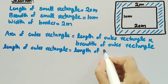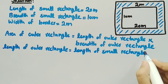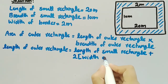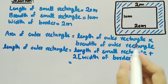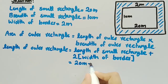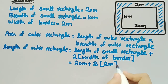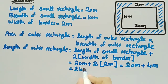The length of outer rectangle is equal to length of small rectangle plus 2 times width of border. Substituting the values: length of small rectangle is 20 meters plus 2 times width of border which is 2 meters, which gives 20 plus 4 equals 24 meters. So length of outer rectangle is 24 meters.